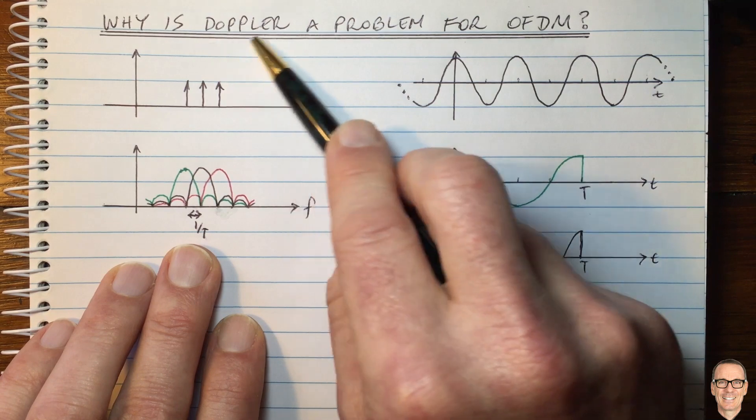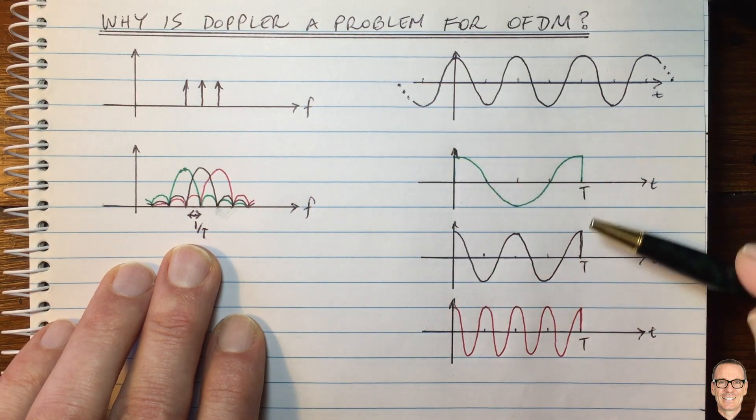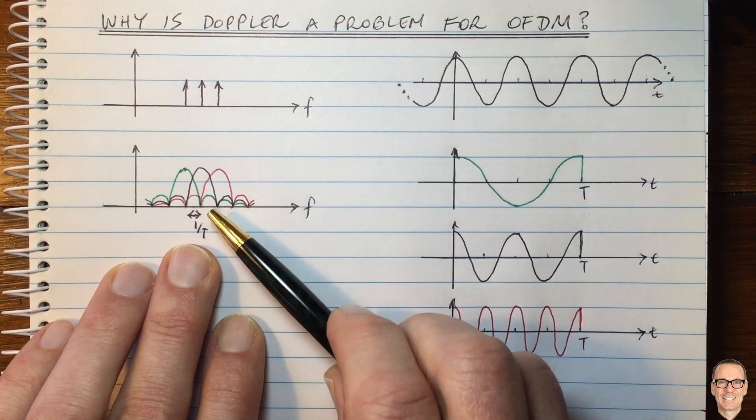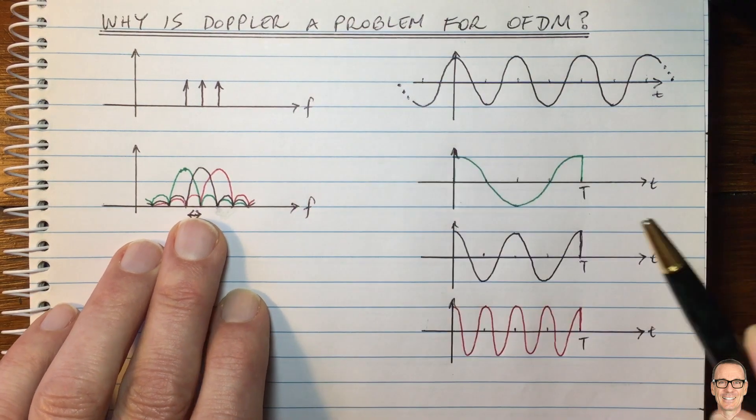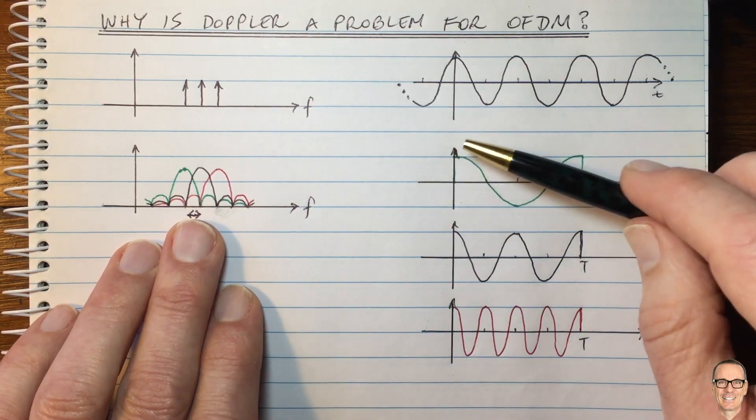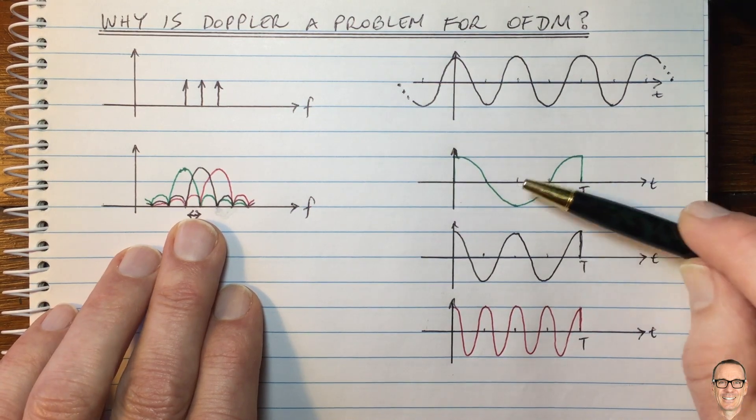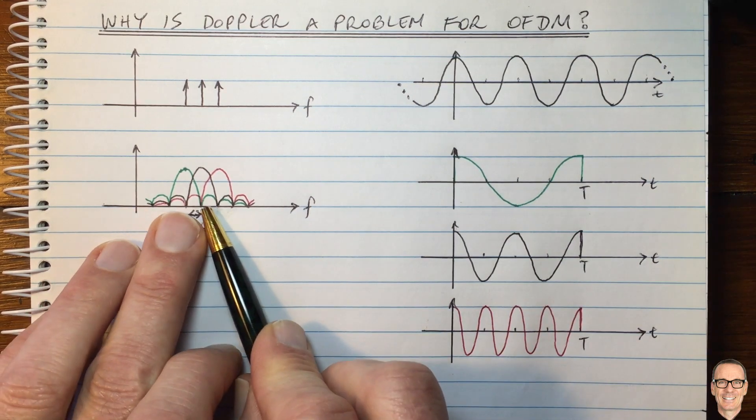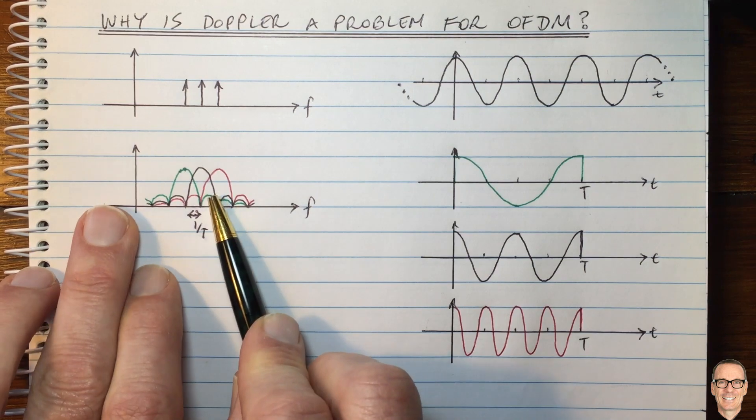So we need to ask about Doppler. And we think, well, what's going to happen if those matched filters have the wrong frequency? Because the received signal has all been shifted. And that's what happens with a Doppler shift. What will happen then is the matched filter for the green waveform will not be matched to the green waveform because the green waveform will be coming at a shifted frequency. So this in the frequency domain, this whole green picture here will have shift.